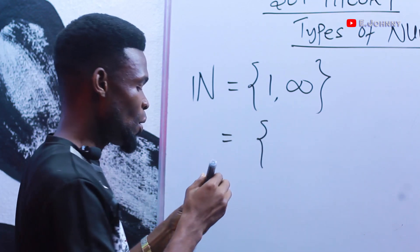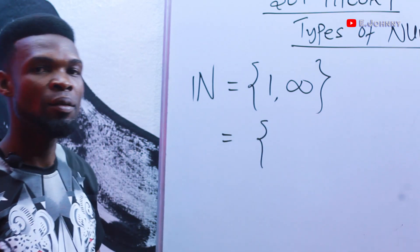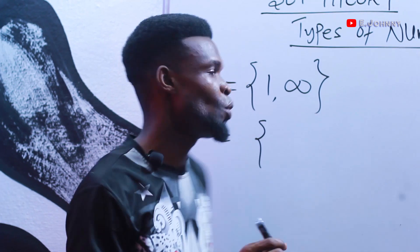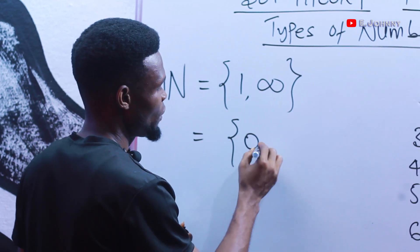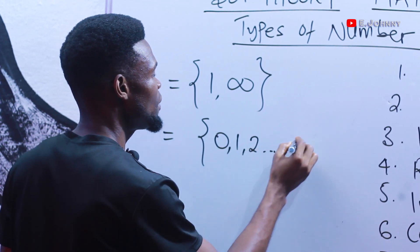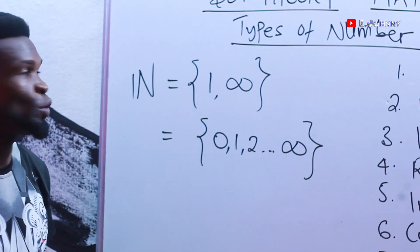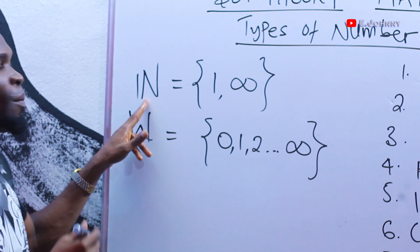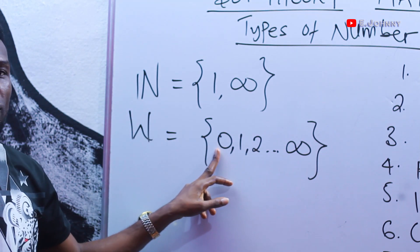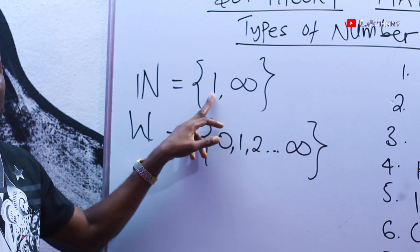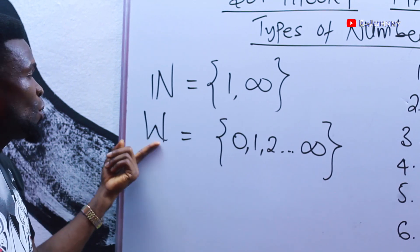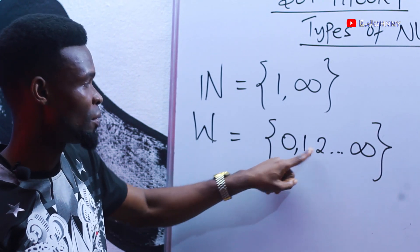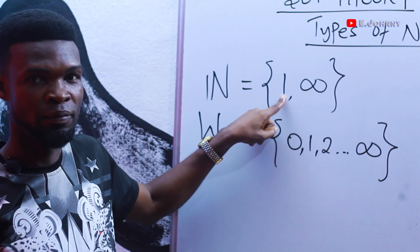Then when we want to look at the type of number or set of numbers that also involves zero, then we talk about whole numbers. So whole numbers begin from zero, one, two, till infinity. So the only difference between whole number W and natural number is that the whole number begins from zero and the natural number begins from one. So you can agree with me that whole number is bigger than natural number — this one starts from zero, but this one starts from one.